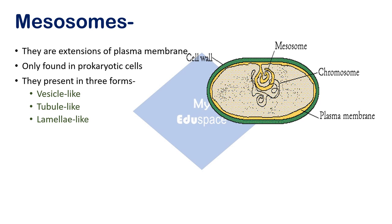The first form is vesicle-type. In this structure, these are vesicle-type that store material and can fuse with other membranes to carry out specific functions. We can draw it like this: suppose this is the cell wall, inside which we draw the plasma membrane, and small vesicle-type structures. If the mesosome is present in this form, it is called vesicle-like.